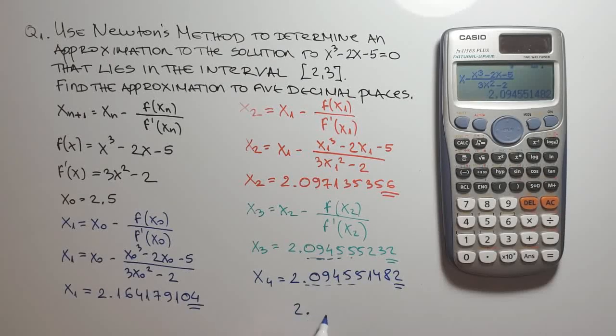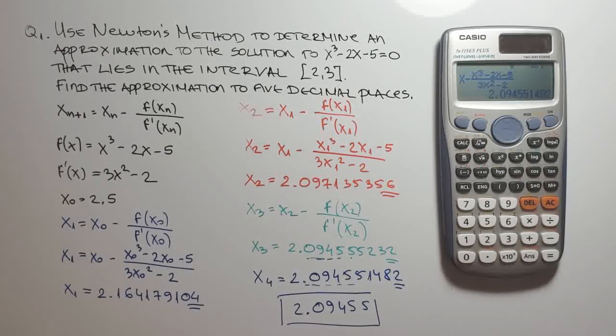And it is 2.09455. So that's it for this video. This is a super easy way to solve Newton's method with Casio FX-115ES+. Thanks for watching.